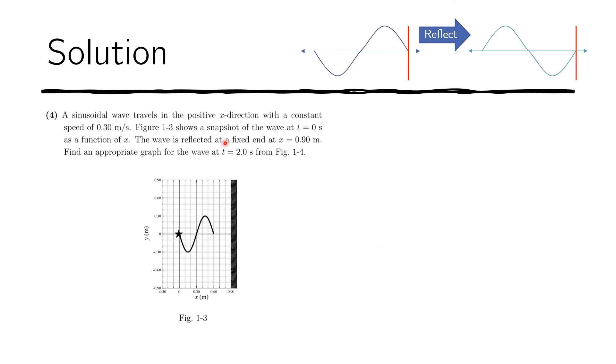The problem is asking us to imagine what happens after t equals two seconds. So to make it easier for us, I put a star at the beginning of the wave. That's going to help us track the wave, the motion of the wave.